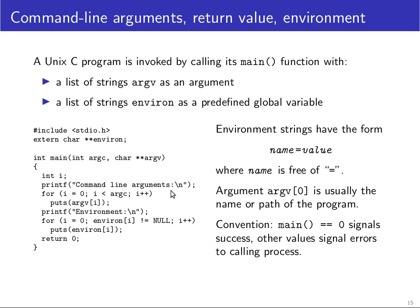The zeroth argument of the command line arguments is usually the name or path of the program, so if a program wants to find out from where it was started it can look into argv[0] and determine the directory where the program was installed — some programs use this to find associated data files relative to the installation directory. The convention is that if main returns zero that signals success, whereas any nonzero value indicates an error.